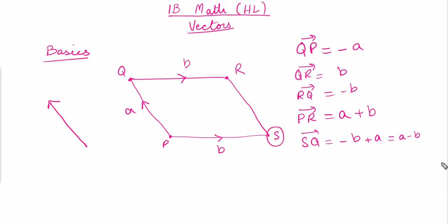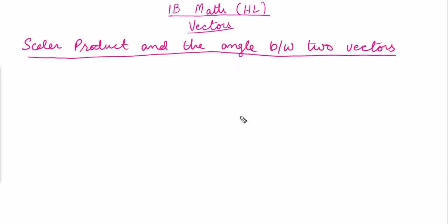Now we will discuss the scalar product and the angle between two vectors. We also call the scalar product the dot product — these are two names for this multiplication of vectors.